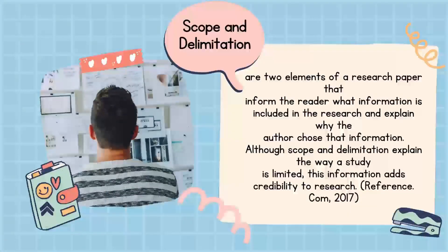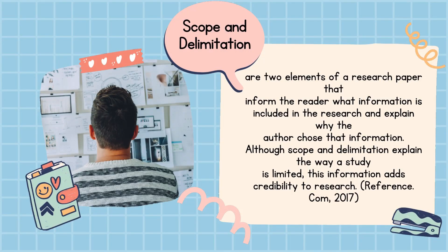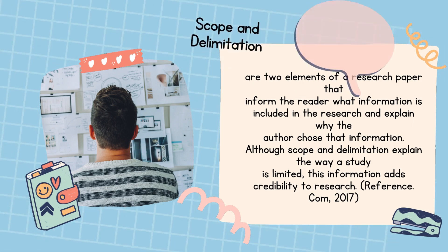Therefore, scope and delimitation are two elements of a research paper that inform the reader what information is included in the research and explain why the author chose that information. Although scope and delimitation explain the way a study is limited, this information adds credibility to a research.